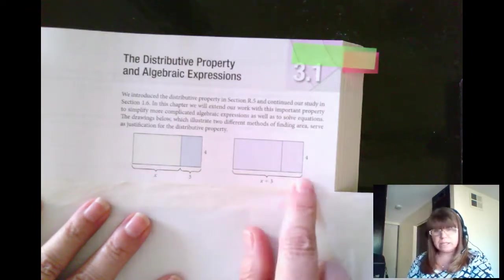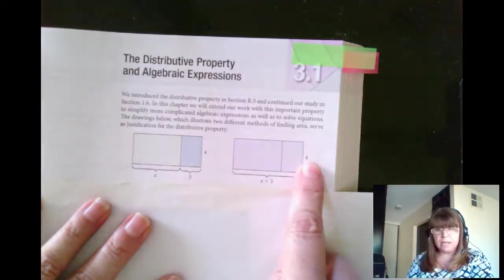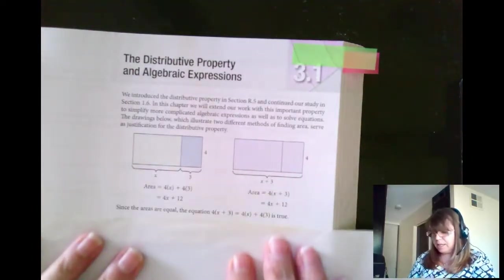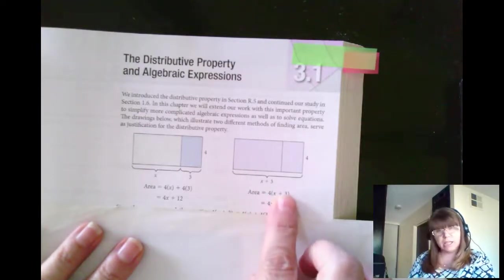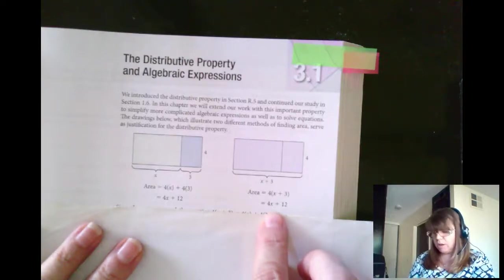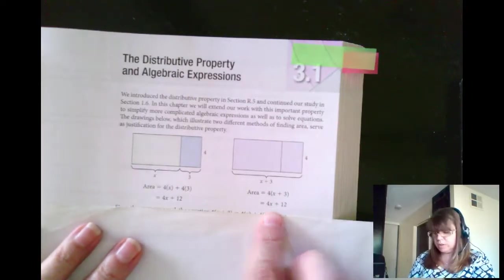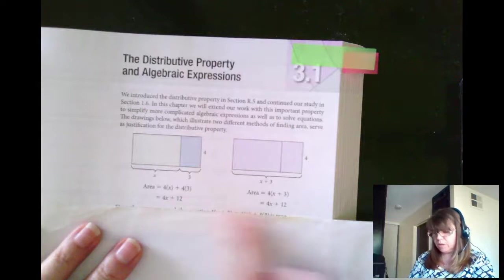Or I can take the whole entire side, multiply it by 4, and again, 4 times x plus 3. I distribute the 4 across the addition, and that would give me 4x plus 12. Both of those are true. 4x plus 12, 4x plus 12.